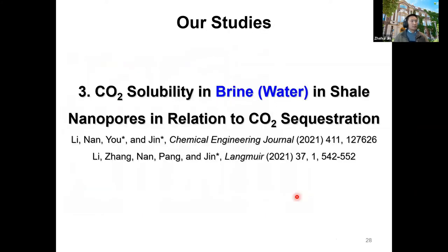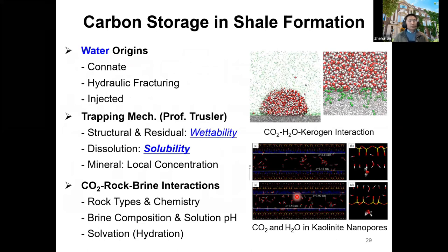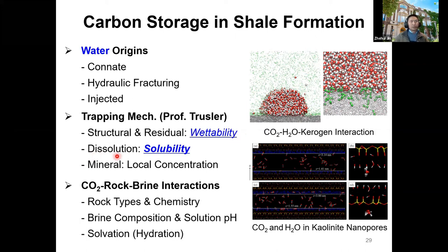The third part covers CO2 solubility in brine in shale nanopores in relation to CO2 sequestration. There are four trapping mechanisms in underground saline aquifers: structural trapping, residual trapping — both dependent on wettability and contact angle; dissolution trapping — dependent on solubility; and mineral trapping — dependent on local CO2 concentration in brine. Water sources in shale formations include connate water, water injected during hydraulic fracturing, and water from water flooding during production.